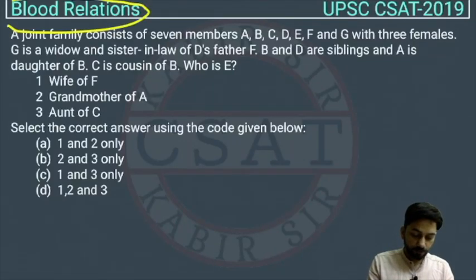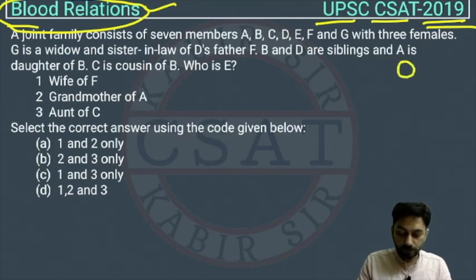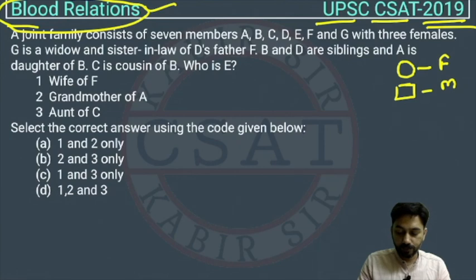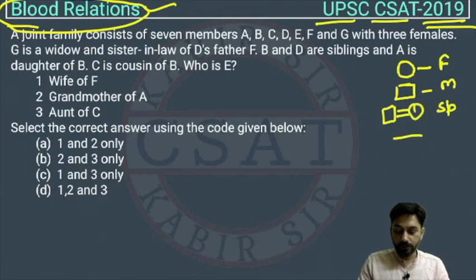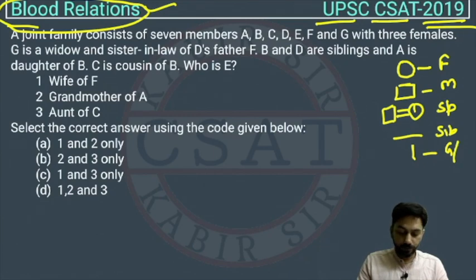This is a reasoning question on blood relations from Chapter Blood Relation, asked by UPSC in the CSAT paper of 2019. Whenever you see a blood relation question, remember to write on paper to avoid confusion: a circle represents female, a rectangle represents male, an equal sign between male and female represents spouse, a horizontal line represents siblings, and a vertical line represents son or daughter — the generation.